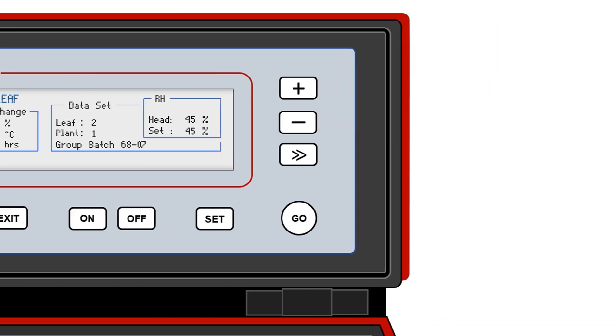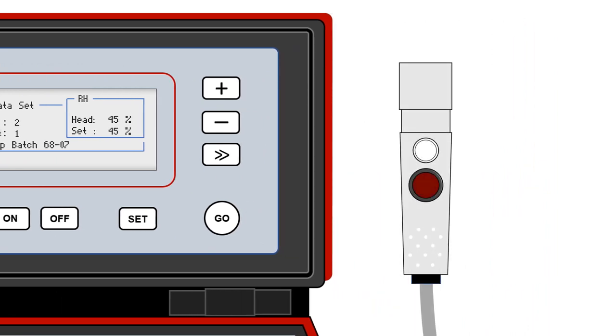The control button on the sensor head performs the same function as the Go button on the AP4 body, enabling fast, one-handed control of the measurement process.